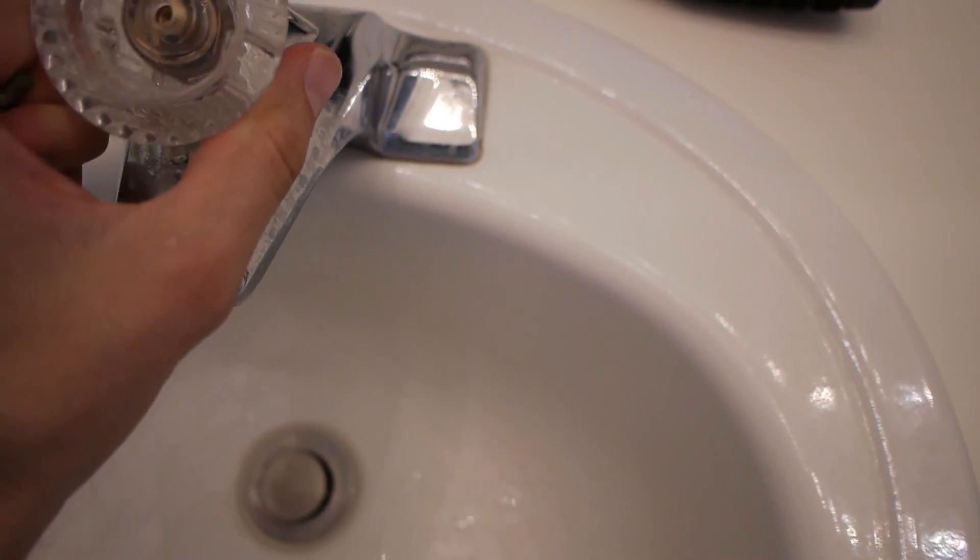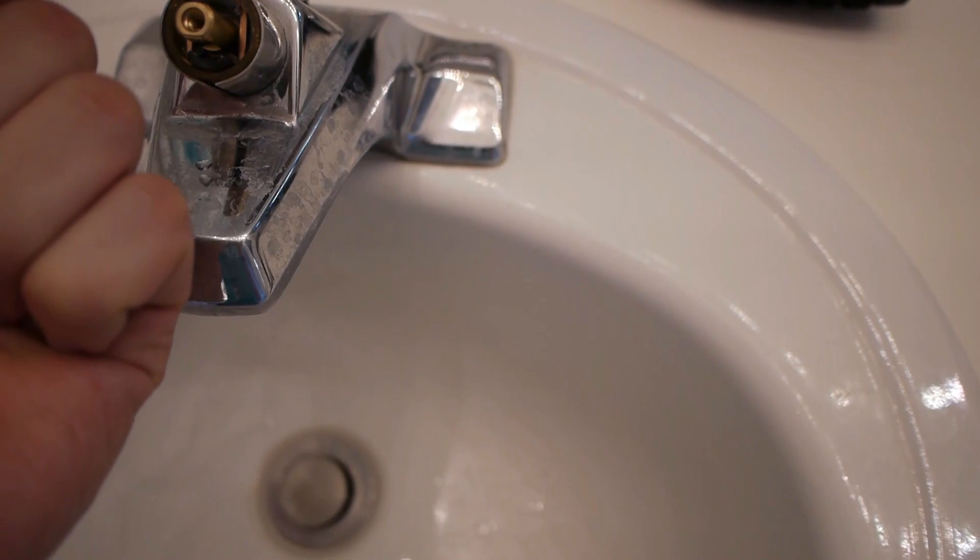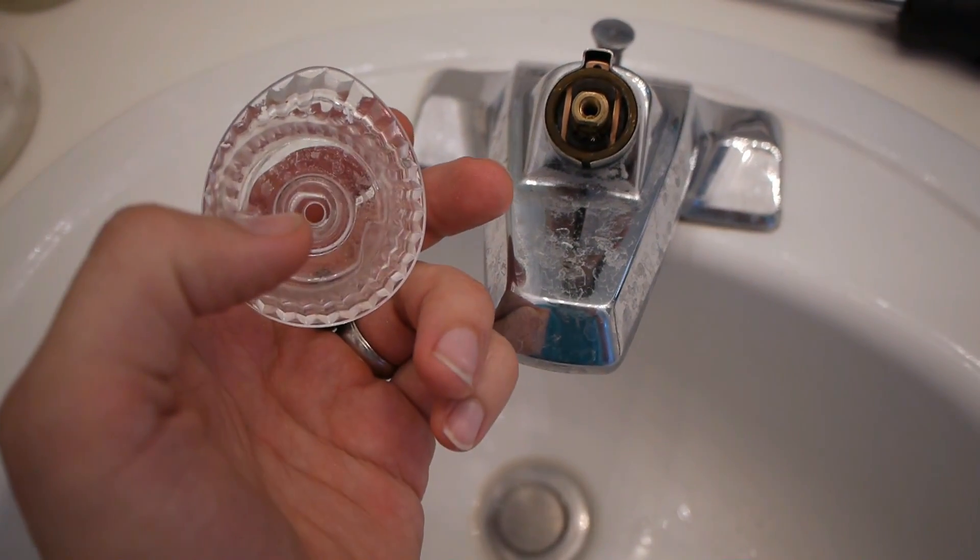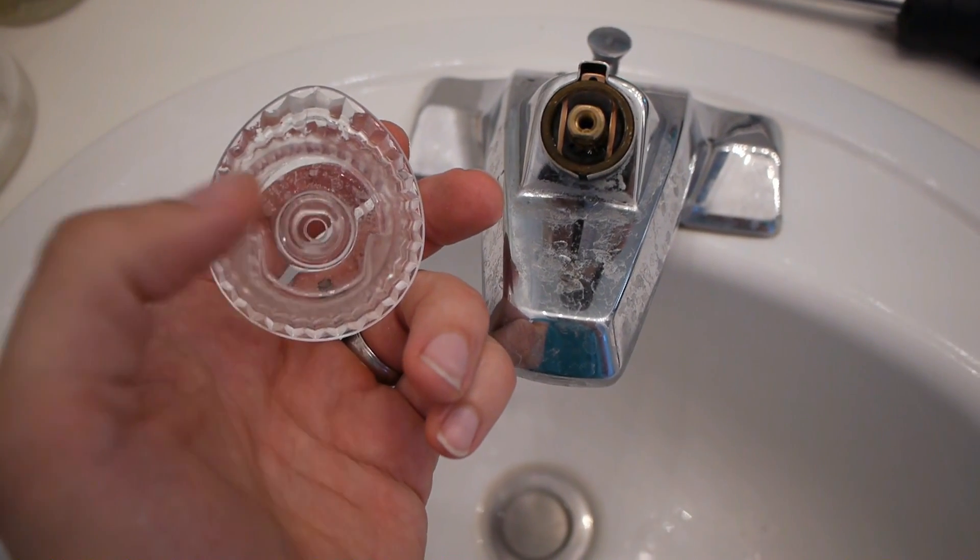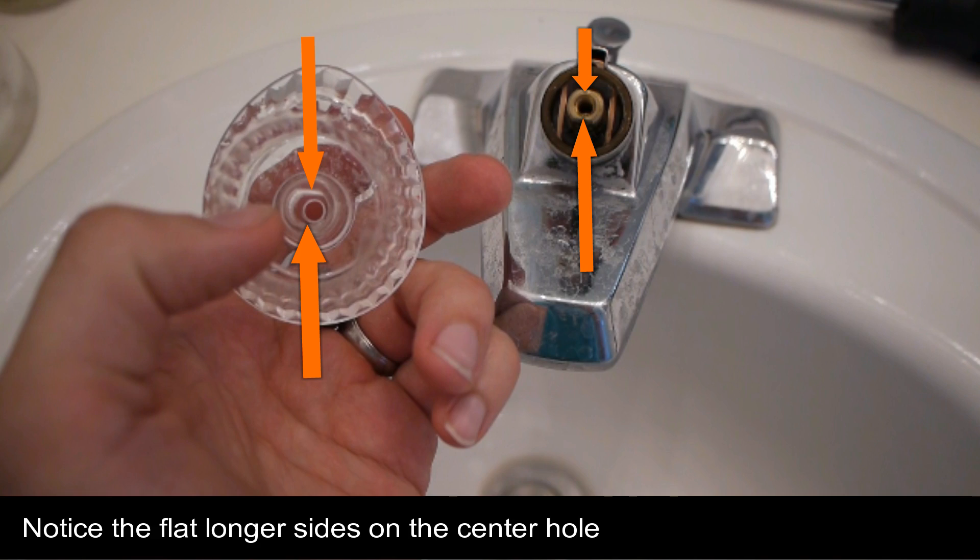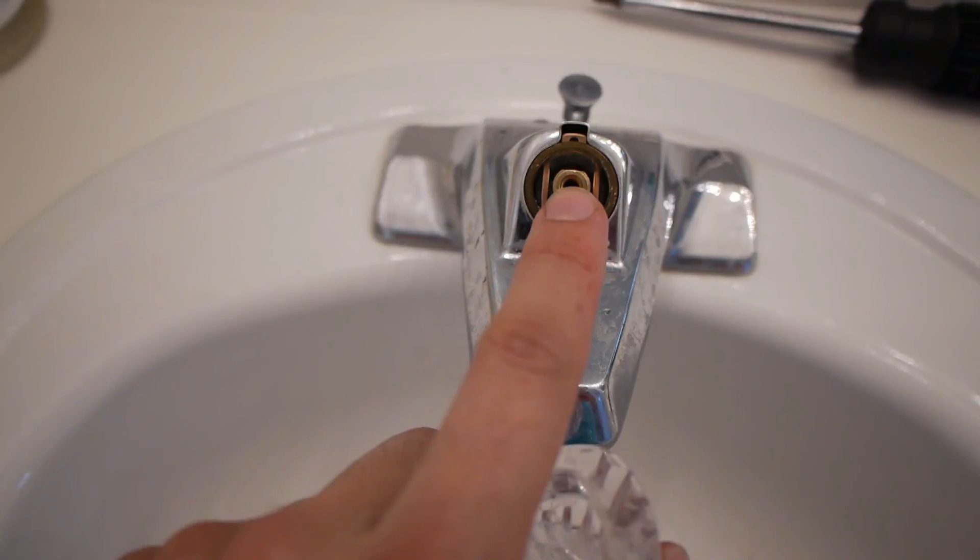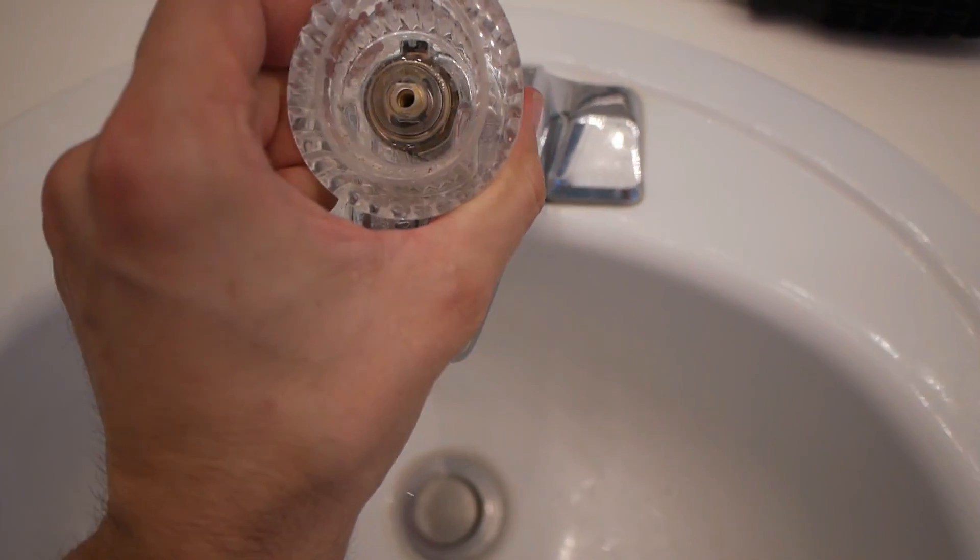Next, we will put the handle on. That should line up. You can see that the handle itself is longer side to side than it is vertically, and that's gonna line up exactly with this shape here.